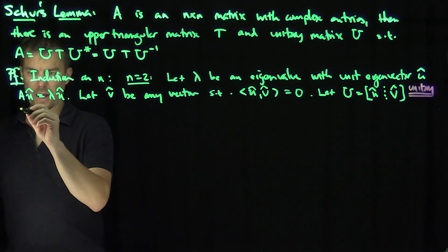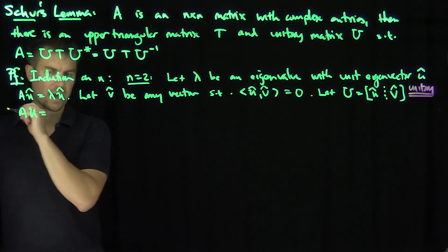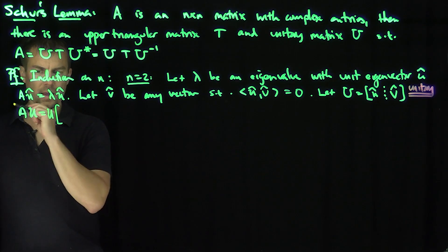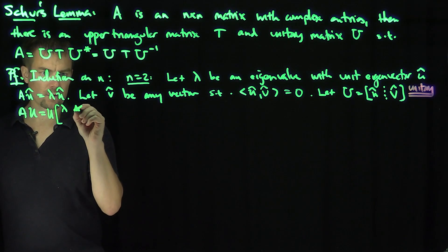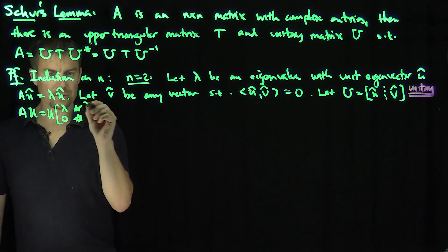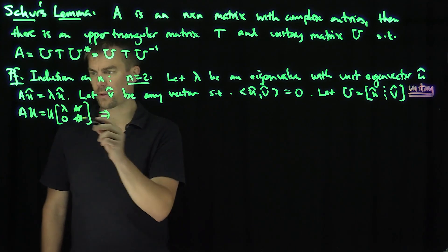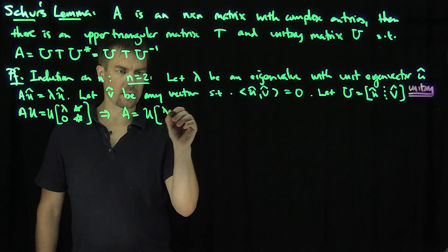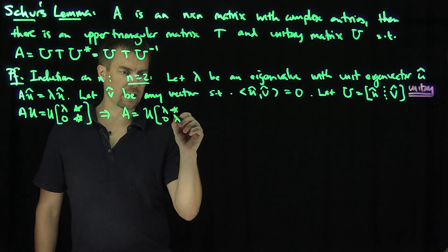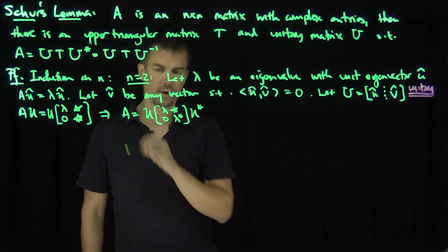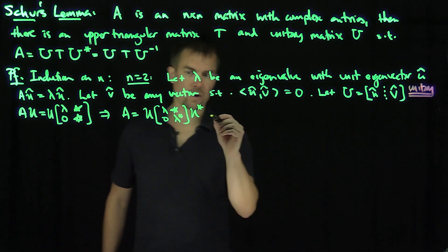Now what can we say? We can say that A applied to U is going to be U times a matrix with lambda in the top-left, zeros below it, some entry to the right, and some lambda-star below — because these matrices are similar to each other, they have the same spectrum. That shows A equals U [lambda, *; 0, lambda*] U inverse, which proves the case when n equals 2.